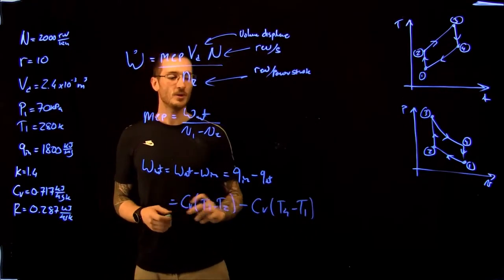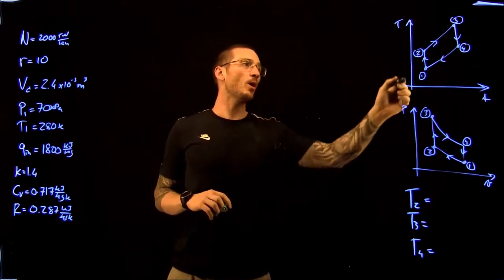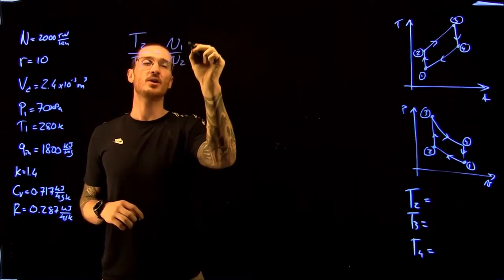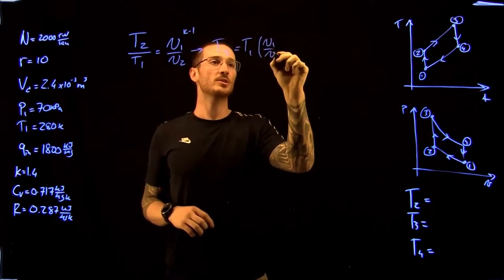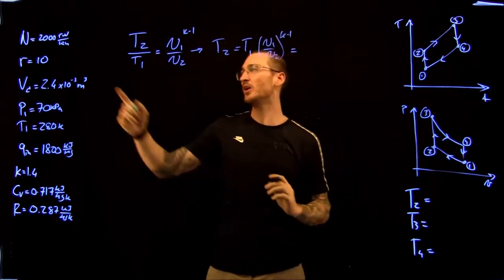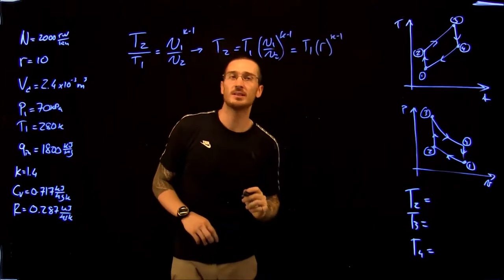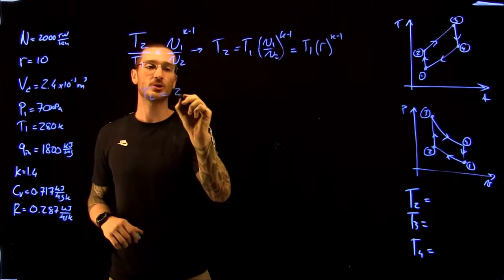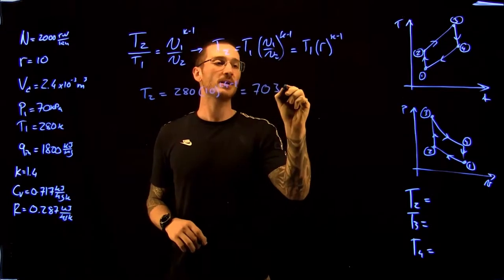We already have T1; we need T2, T3, and T4. From 1 to 2 we have an isentropic process, so T2/T1 = (v1/v2)^(k−1). Isolating T2: T2 = T1 × R^(k−1), where R is the compression ratio. So T2 = 280 × 10^(1.4−1) = 280 × 10^0.4, giving T2 = 703.33 K.